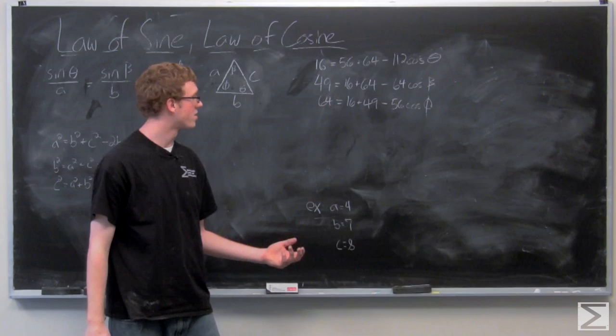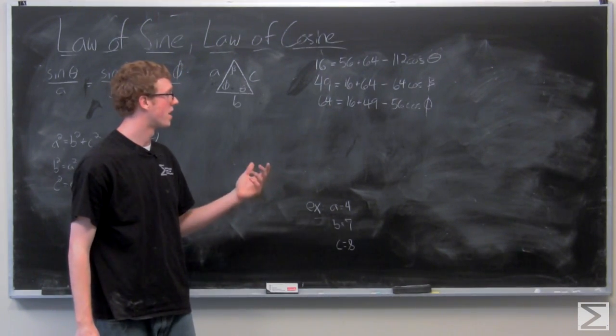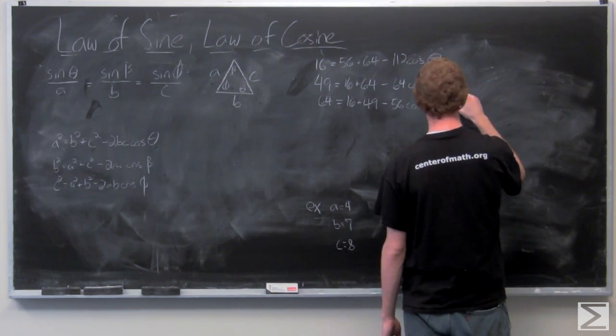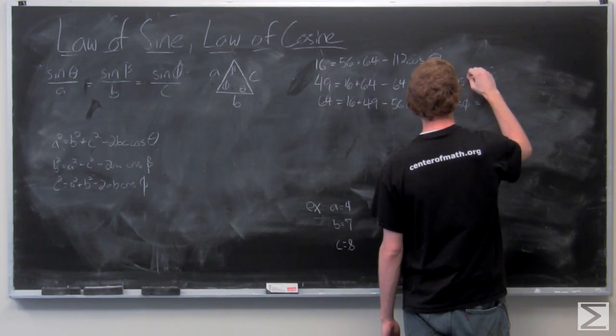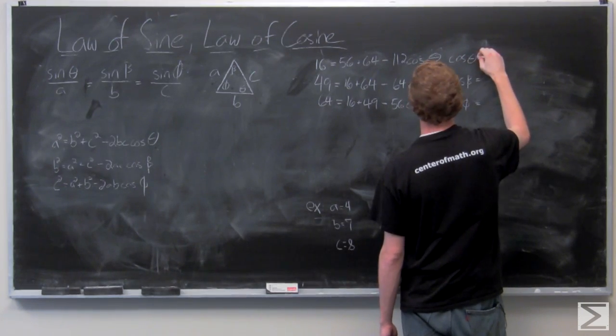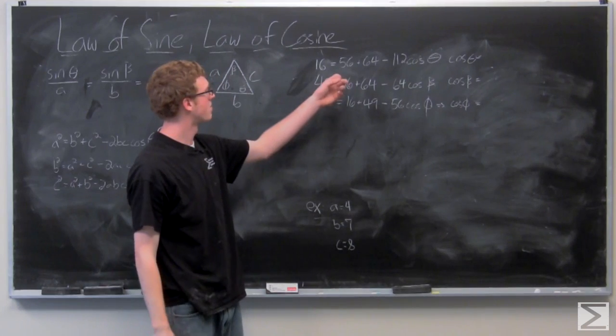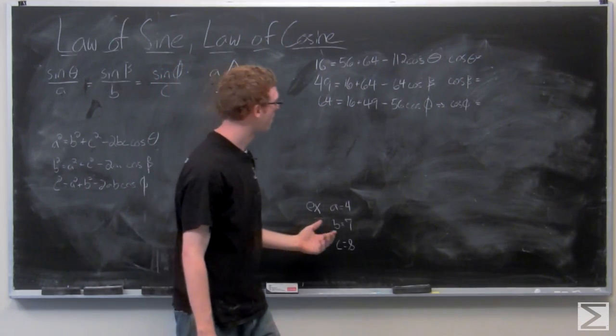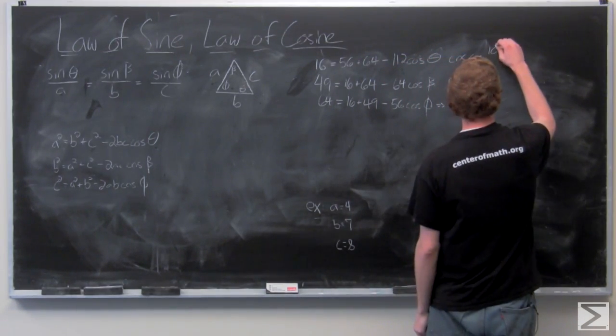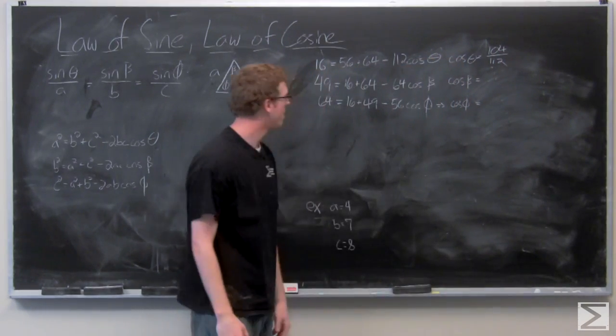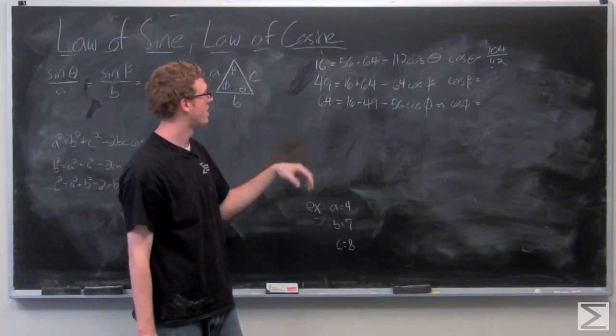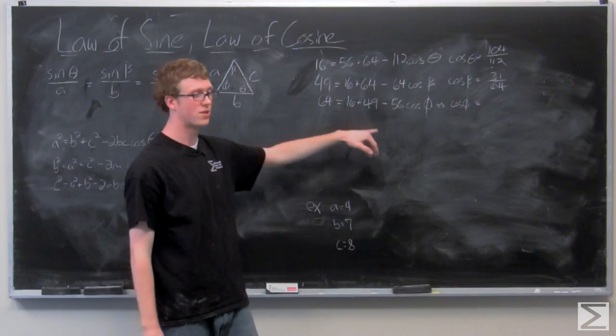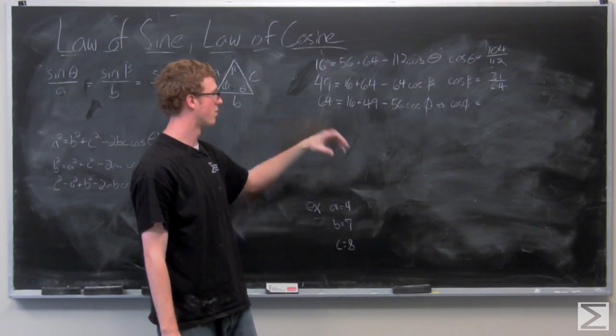Now all we need to do is manipulate these equations a little bit and find what we're taking the inverse cosine of. Then all we need to do is just find those angles. So we have 56 plus 64 is 120, and then 16 minus that is negative 104. And then we divide by that negative 112. And then we're going to have 16 plus 64 is 80. 49 minus 80 is negative 31 over 64. And then we're going to have 16 plus 49 is 65. 64 minus that is negative 1 over 56, negative 56.